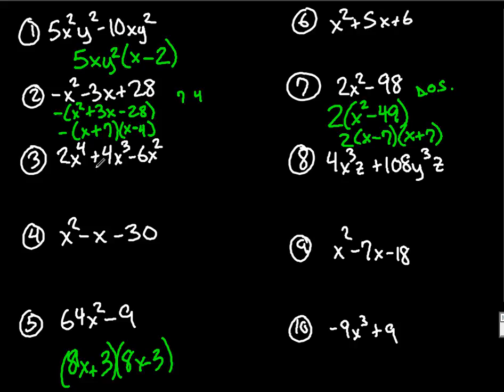Number 3 is also an example of a GCF. I can factor out a 2, and they each have an x squared. I'm left behind with an x squared, a 2x, and a minus 3.